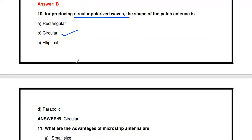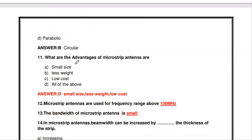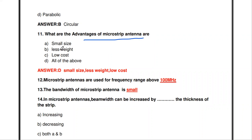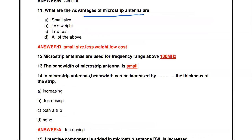The next question: what are the advantages of the microstrip antenna? The options are small size, less weight, low cost, and all of the above. The answer is all of the above. The greatest advantages of the microstrip antenna are its very small size, low weight, and low cost.